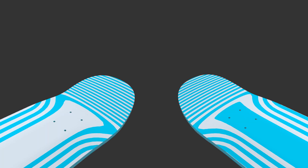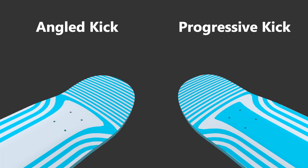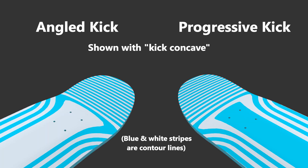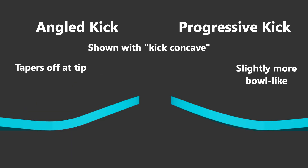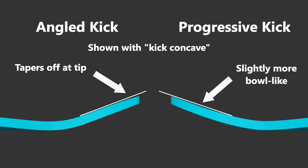Since the kick gets progressively steeper as you move towards the tip, this is called a progressive kick. A progressive kick may provide a bit more of an organic feel than an angled kick, almost providing more of a bowl-like feel. If the kick also has concave, this may help your foot lock into the kick ever so slightly more.